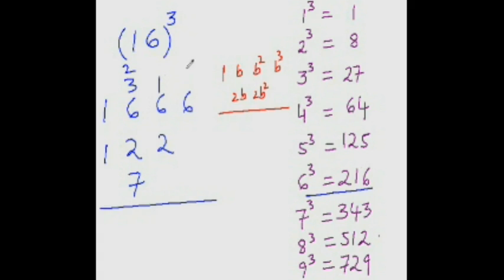So 6. This is 6 plus 1 is 7, 7 plus 2 is 9, and this would be 7 plus 2 is 9, 9 plus 6 is 15, 15 plus 3 is 18, 18 plus 2 is 20, and 2 comes here. So 2 plus 1 is 3, and 3 plus 1 is 4. So the answer is 4, 0, 9, 6. That is what 16 cubed is.